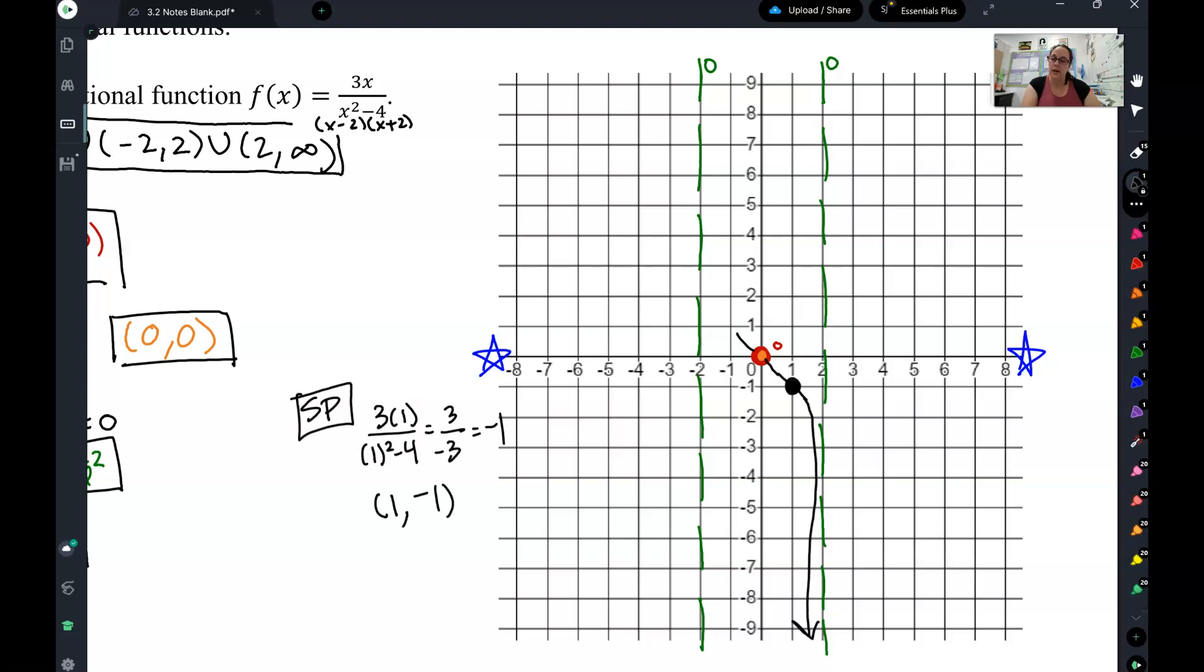I can't go up because that would make another x-intercept, so the only option is to go down. Over here on this side, another asymptote, I can go up the asymptote or down. Not going to go down because that will make an x-intercept, so I have to go up.